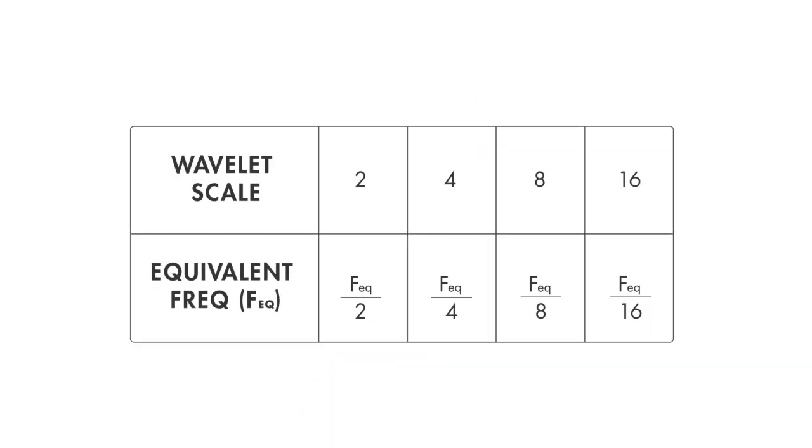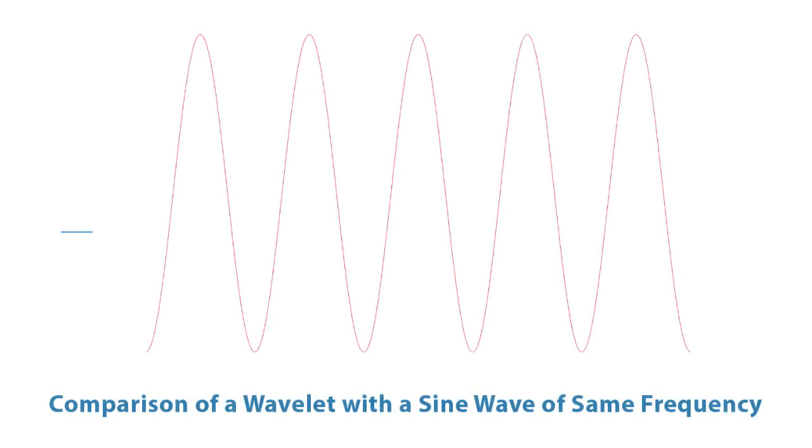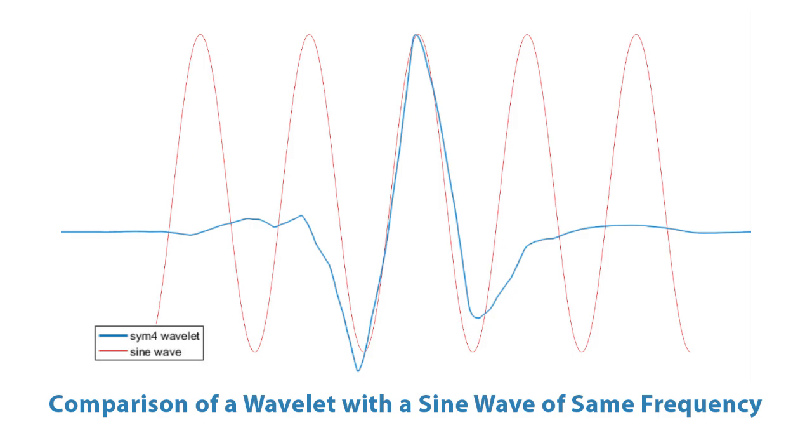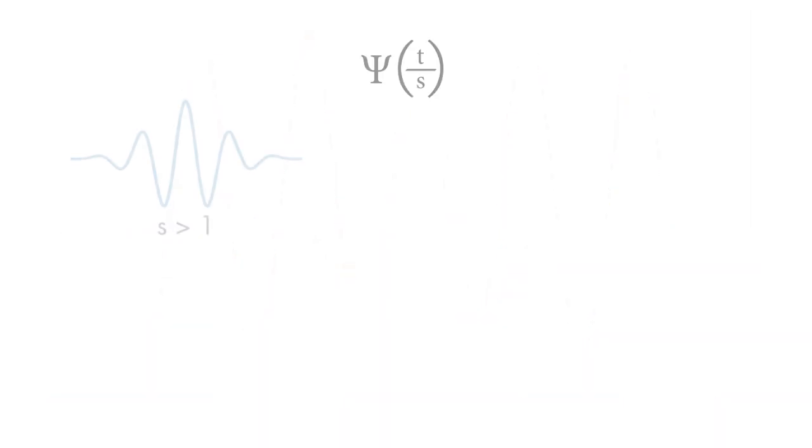Therefore, when you scale a wavelet by a factor of 2, it results in reducing the equivalent frequency by an octave. Here is how a sym4 wavelet with center frequency of 0.07 Hz corresponds to a sine wave of the same frequency. A larger scale factor results in a stretched wavelet, which corresponds to a lower frequency.